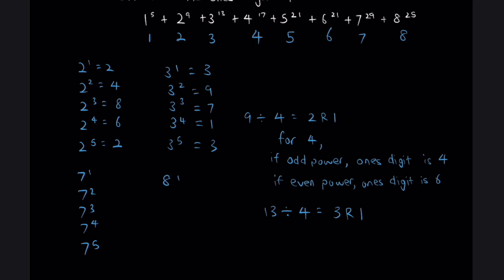7 and 8, by the way, both also repeat every 4 numbers. 8, 3, 8, 4, 8, 5. For 7, these are the ones digits that we have. For 8, these are the ones digit we have.